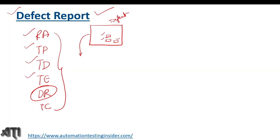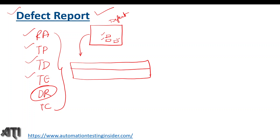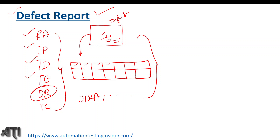Now that defect has to be reported to the development team. There are two ways to report it. The first way is that some companies use an Excel sheet, where we have various fields in the defect report template — like defect ID, summary, status, priority, and severity — which we are going to discuss in the coming slides. This complete process is called defect reporting, and this template is called a defect report template.